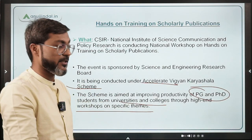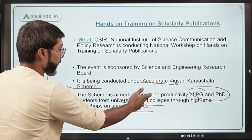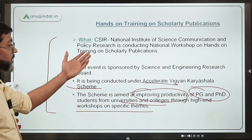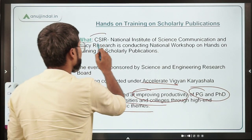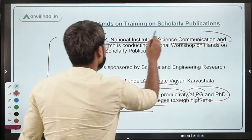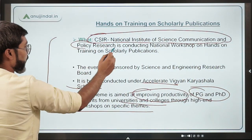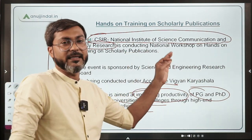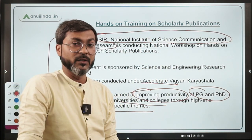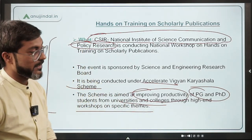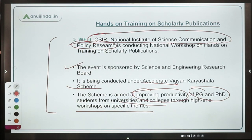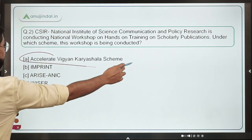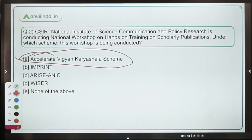The productivity of postgraduate and PhD students is improved by providing high-end workshops on specific themes. This workshop is organized by CSIR National Institute of Science Communication and Policy Research and is sponsored by SERB — the Science and Engineering Research Board. Therefore, the correct answer is option A: Accelerate Vigyan Karyashala Scheme.